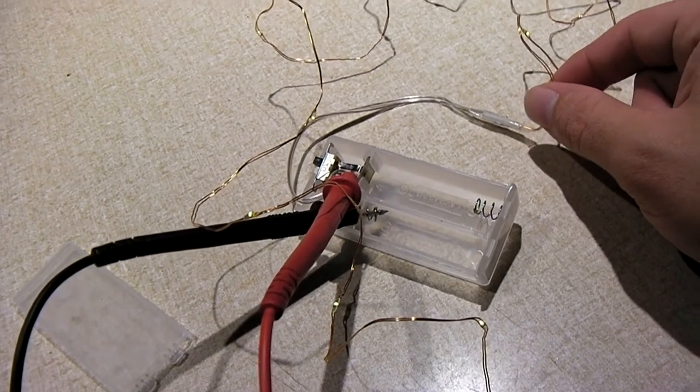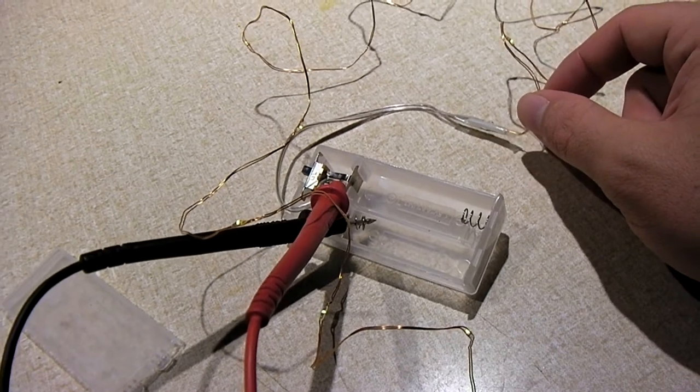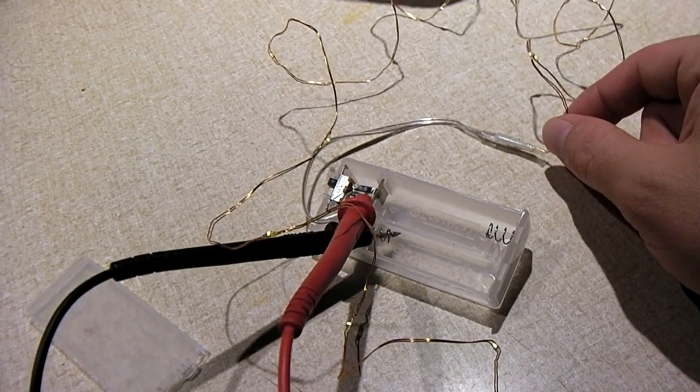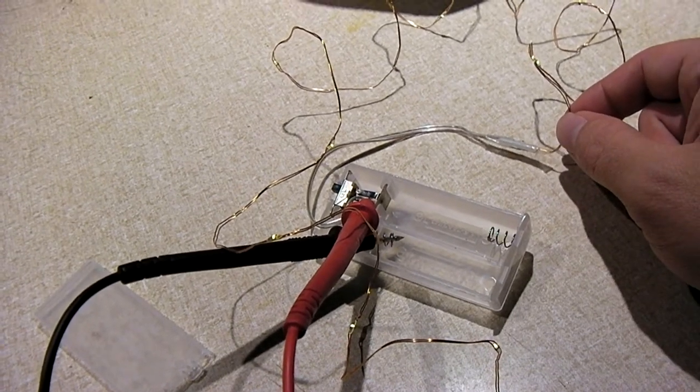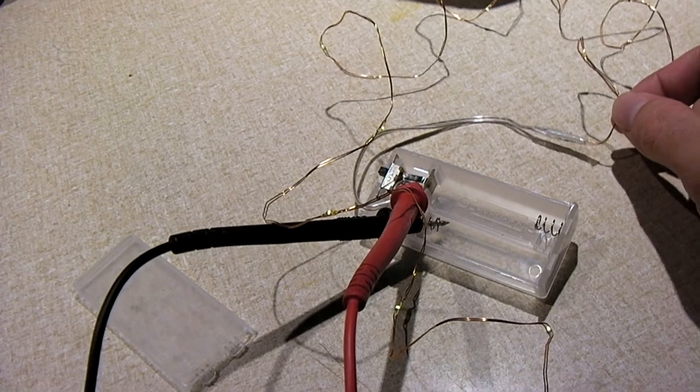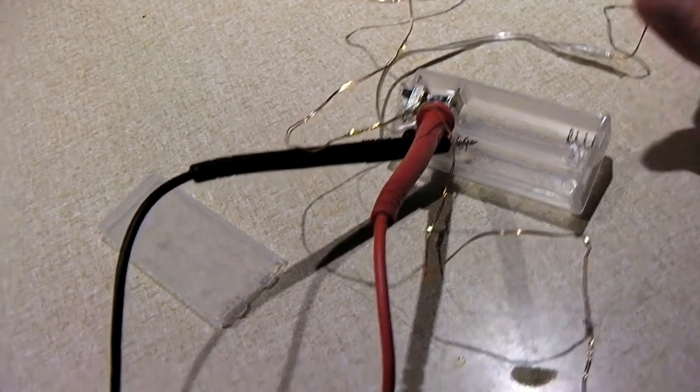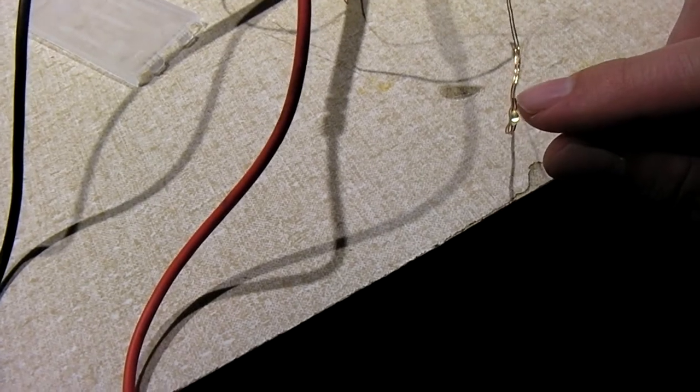But that insulation can easily be scratched off. And when that happens, you can have shorts, short circuits. Now that hasn't happened yet with this little light set, but it could happen. As a matter of fact, I've already identified one possible short circuit down here. It's at the very end.